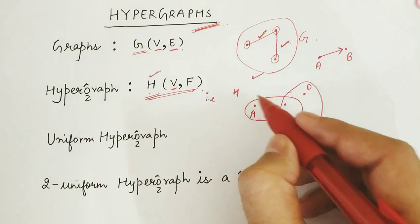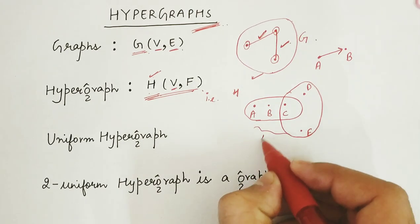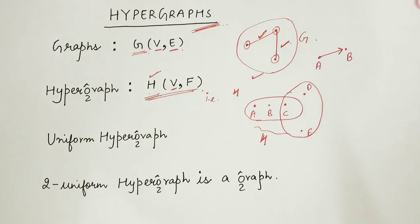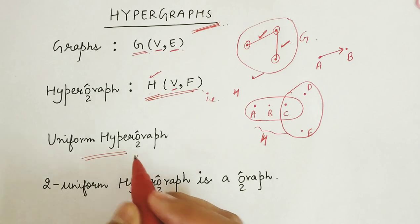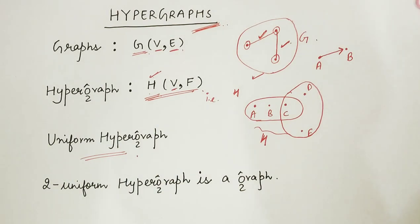This is how a hypergraph is made. Now, let us talk about a special type of hypergraph. That is, a uniform hypergraph or a K-uniform hypergraph.